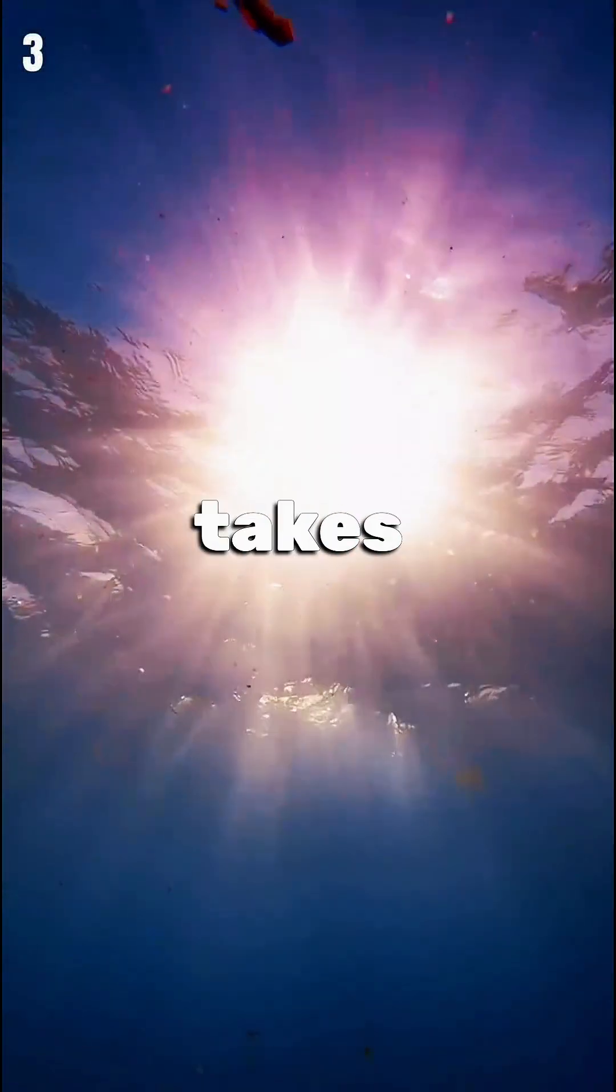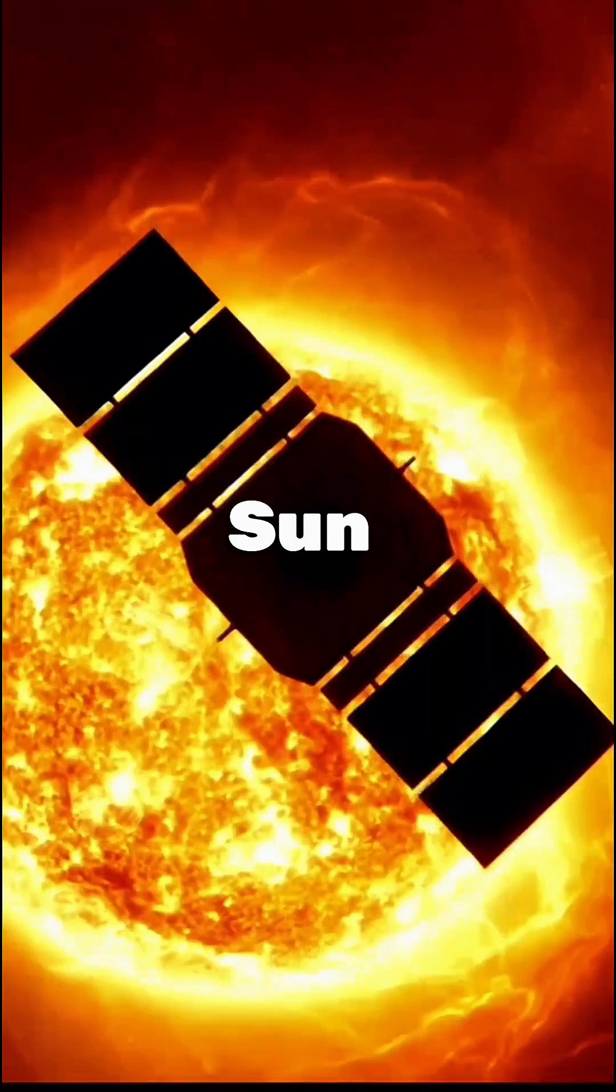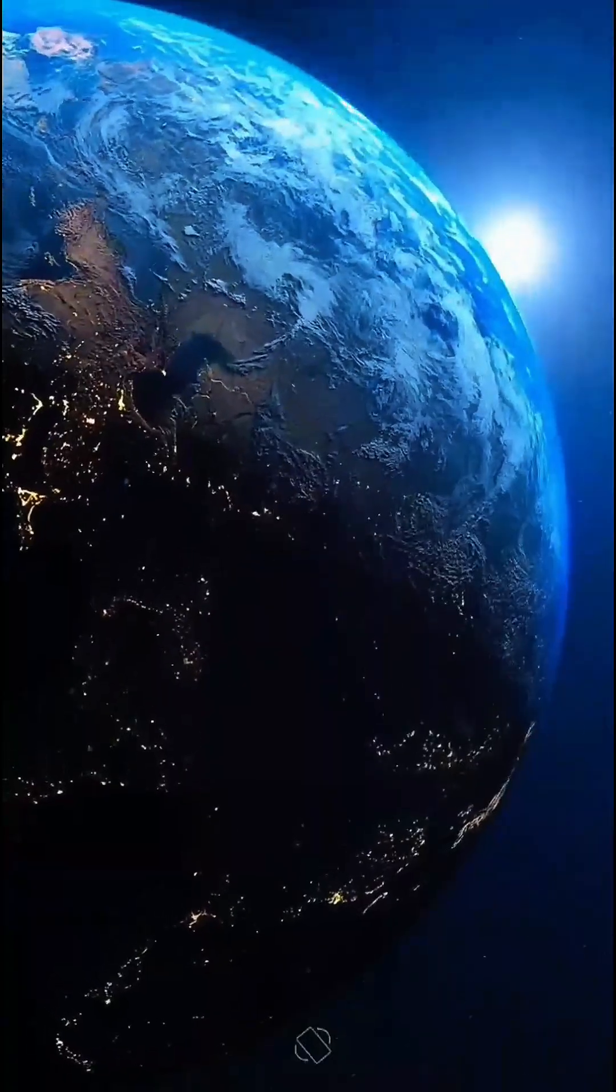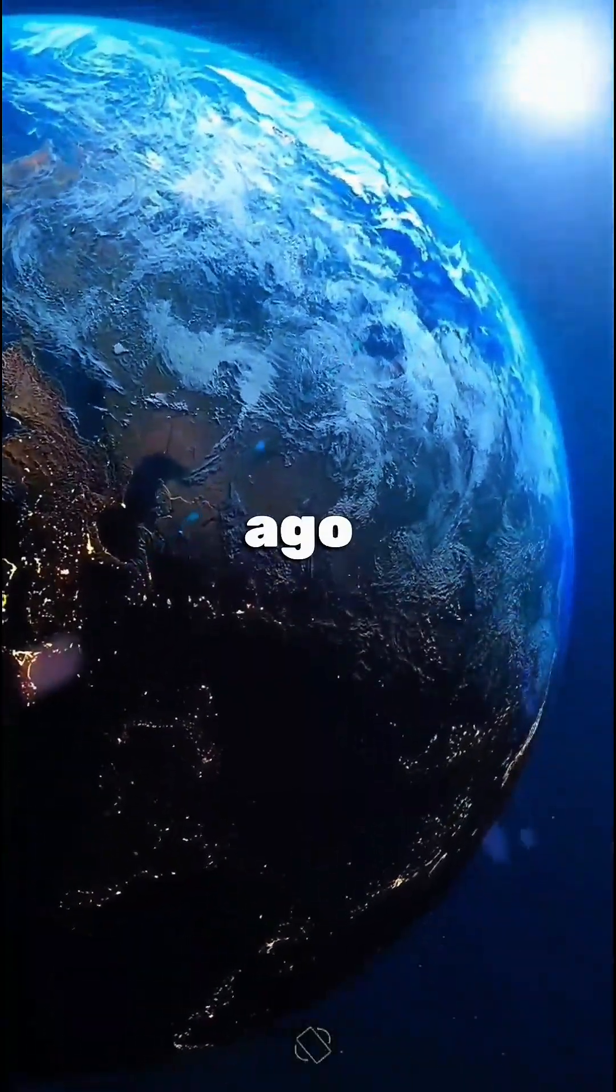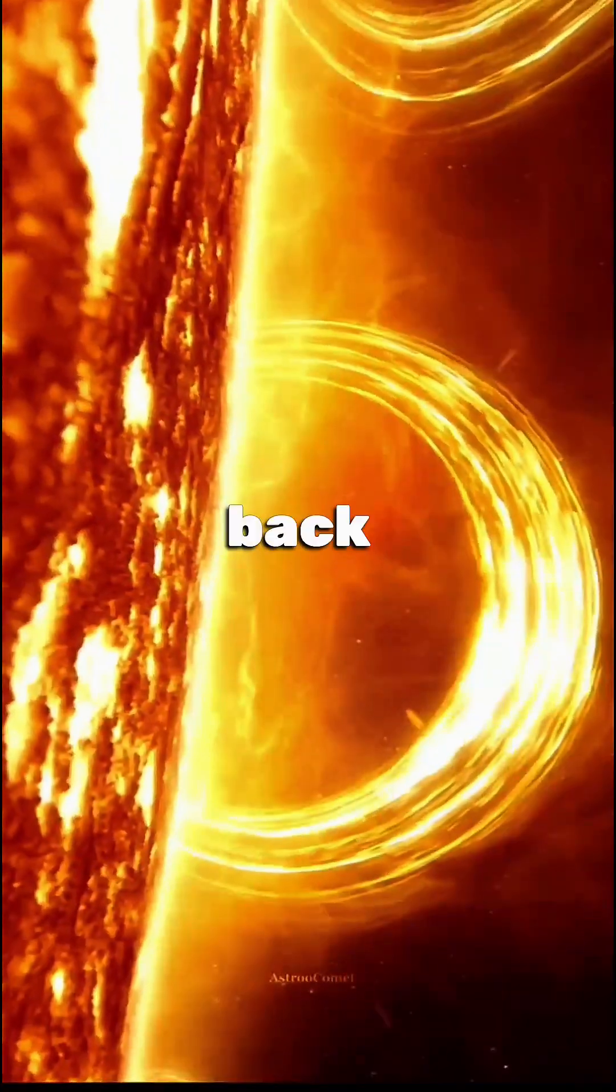The sunlight we see takes about eight minutes to travel from the Sun to Earth. So when you look at the Sun, you're actually seeing it as it was eight minutes ago, like looking slightly back in time.